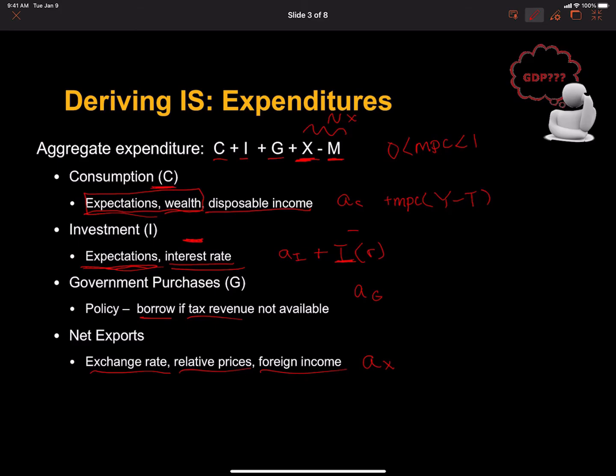Part of consumption is imported. So we need to think about imports in a similar way that we do consumption. We have some autonomous consumption that is autonomously imported. And then each dollar earned, some of those dollars are spent on imported goods. The marginal propensity to import is some number that's going to be greater than zero and less than one and has to be less than the marginal propensity to consume.